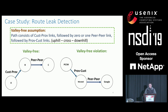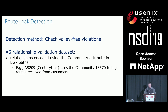We have two examples here. On the left, it satisfies the valley-free assumption. On the right, the path creates a valley because there is a cross after the downhill. The intuition of the valley-free assumption is that no AS should have the incentive to forward others' traffic without being paid. So here, no one pays Moreto, so Moreto shouldn't have the incentive to carry traffic for its provider, PCCW.